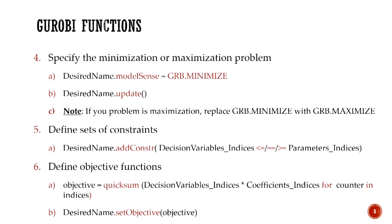The next step is to specify whether we are dealing with a minimization or maximization problem. To do that, we call model.ModelSense equal to GRB.MINIMIZE, which specifies a minimization problem. Don't forget the next line — you call model.update. If our problem is maximization, we replace GRB.MINIMIZE with GRB.MAXIMIZE. Both are all capital letters.